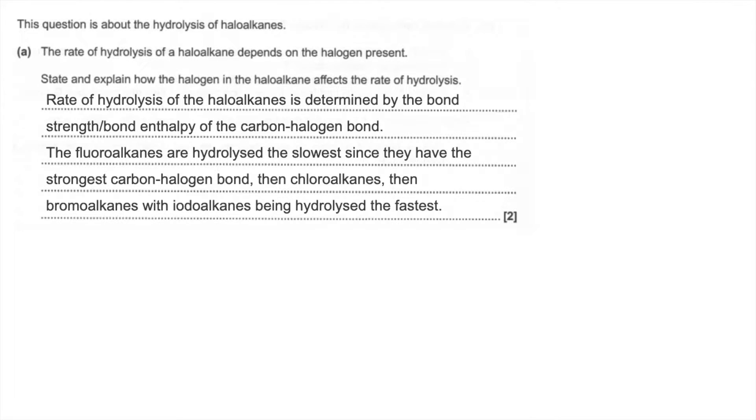Then your chloroalkanes, then your bromoalkanes, and then iodoalkanes will be hydrolyzed the fastest. They've got the weakest carbon-halogen bond, or the lowest bond enthalpy carbon-halogen bond.